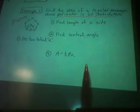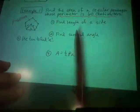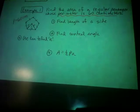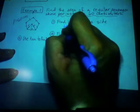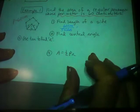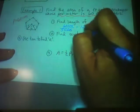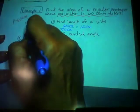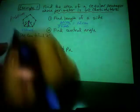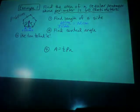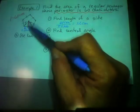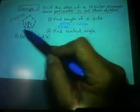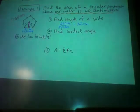First, find the length of a side. A pentagon has 5 sides, so 60 ÷ 5 = 12 centimeters per side. The apothem bisects that side, so each half is 6 centimeters. The apothem creates a right triangle with the central angle, the side of the pentagon, and the radius.